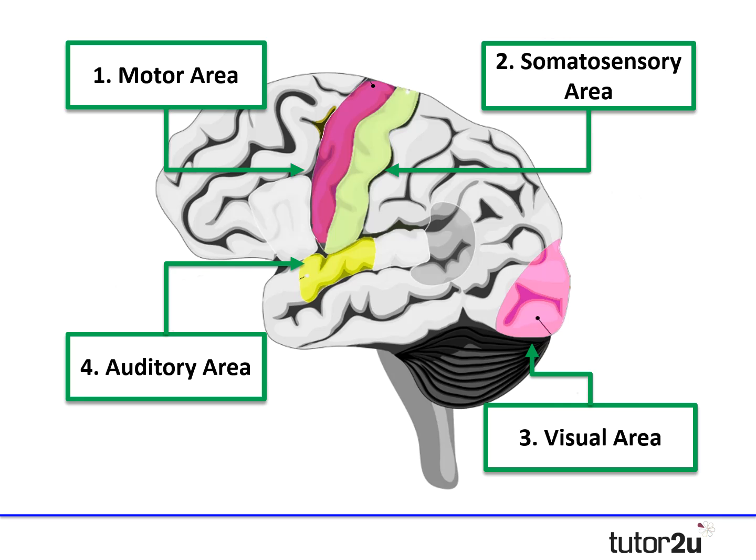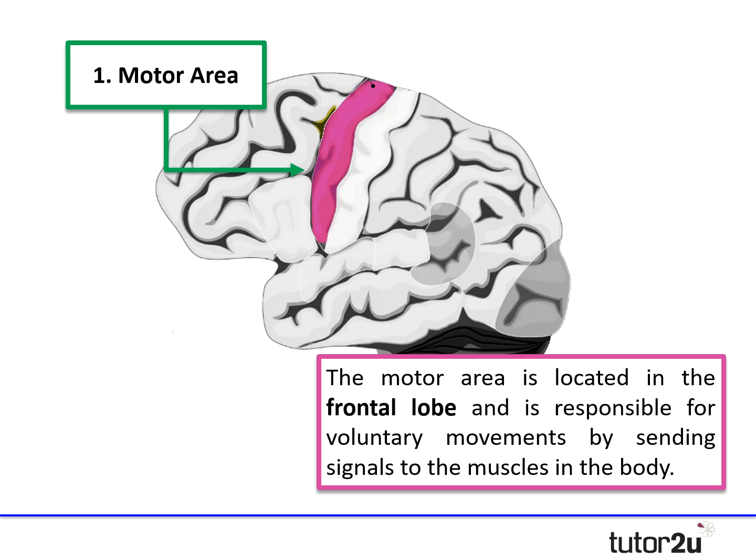Taking each in turn: the motor area is located in the frontal lobe and is responsible for voluntary movements, sending signals to the muscles in the body. It's particularly interesting because the regions of the motor area, spanning that pink shaded area on screen, are arranged in a really logical order — for example, the region controlling finger movements is located next to the region controlling hand movements, then arm movements, and so on.